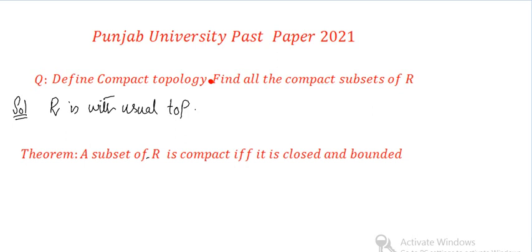Now here, R is the set of real numbers, and the usual topology is not mentioned, that's why topology is the usual topology. There is a pattern here. If we are asked to find the compact subsets of R, R is an infinite set, and there are also infinitely many subsets.